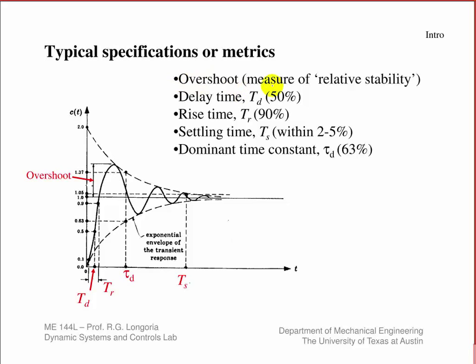Overshoot is important sometimes because we think of it as a measure of relative stability as opposed to absolute stability. Absolute stability would mean is the system stable or not? It may be unstable. So it doesn't come back to a certain position, an equilibrium position. Relative stability is more how much is it overshoot a value? Eventually it does come back.